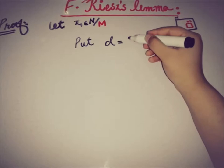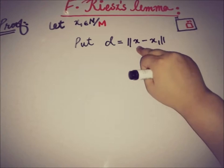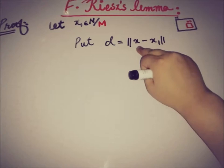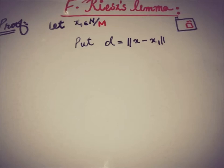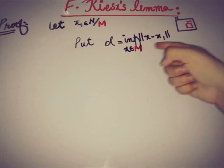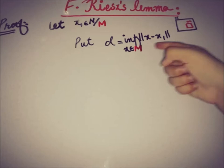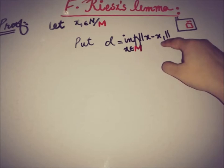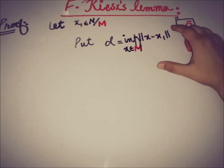First, we take an element from N that is outside M, since M is a proper closed subspace of N. Let x₁ be taken from N \ M. We define d as the infimum of the norm of x₁ − x over all x in M, that is, the minimum distance of x₁ from M.